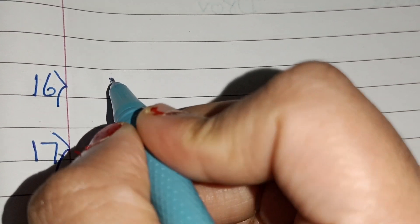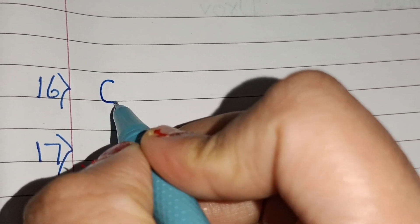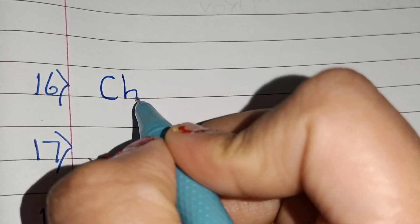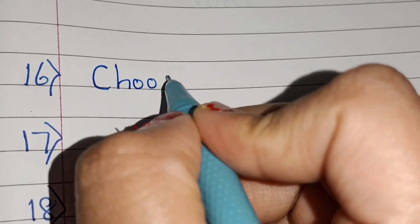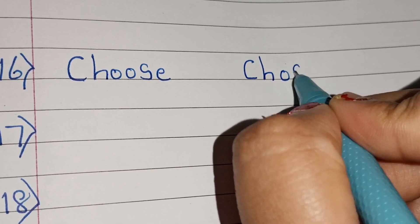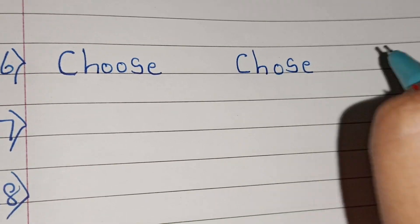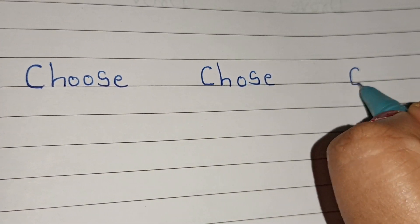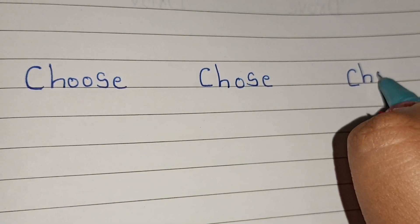Sixteenth: choose — verb 1; chose — verb 2; chosen — verb 3.